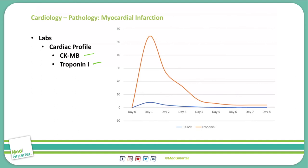Troponin levels increase greatly within that first day, peak at 24 hours, and then take about 7 to 10 days to return to a normal level. A potential re-infarction on day 4 would still show a positive Troponin-I level, as it remains elevated from the original infarction. Checking the CKMB at that point will tell us whether or not there was a true re-infarction or if this is still residuals from the previous infarction.